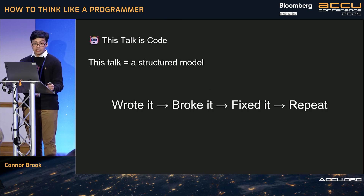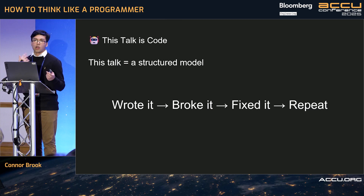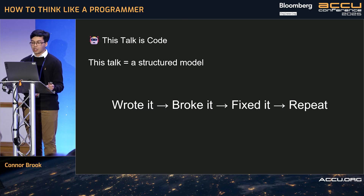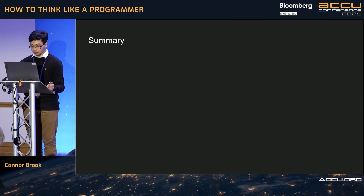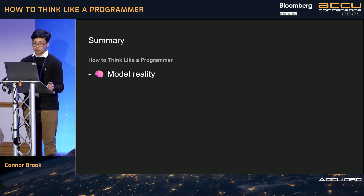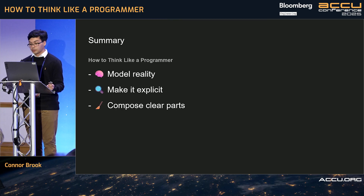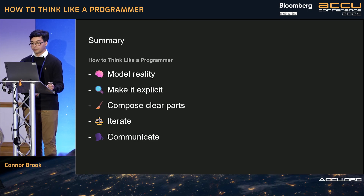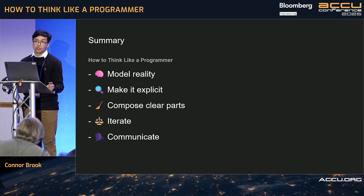This talk itself is code. I started off, wrote a version of it, tested it on my friends, saw what they reconstructed in their heads, and refined it. Code thinking is a model in itself. Your thinking will have blind spots, but you debug them. That's what thinking like a programmer means — you don't wait for perfection, you iterate towards clarity. So overall: don't just debug code, debug thought. Model reality. Make it explicit. Compose clear parts. Iterate and communicate. Because programming isn't really about programming — it's about thinking clearly, modeling clearly, and communicating clearly. That's what makes you dangerous. Thank you for listening.